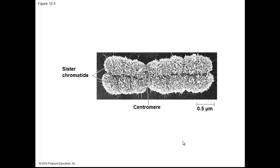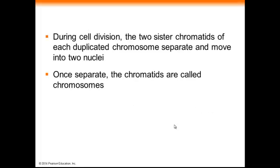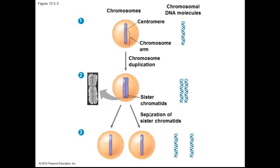Here's a picture of two sister chromatids — each one is a sister chromatid, and right in the middle is the centromere, which is basically like a protein waistband that holds the chromatids together. During cell division, the chromatids separate and move into two nuclei, and once they are separated, we refer to them again as chromosomes. So a chromosome is duplicated to form sister chromatids, and after cell division we have one chromosome in each daughter cell.